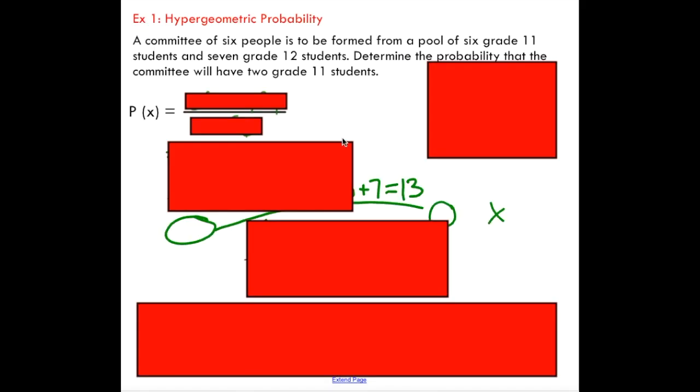Here's an example. We're forming this committee from a pool of six grade 11 students and seven grade 12 students. We want to determine the probability that the committee will have two grade 11 students. So when we take a look here we've got six grade 11 students and seven grade 12 students. We've got a total of 13 students.